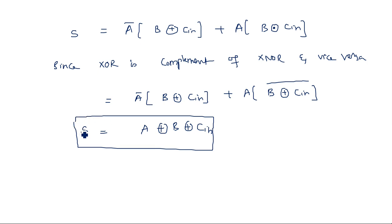That means the sum in a full adder is obtained by using a 3-input XOR gate, with A, B, and Cin as the inputs.